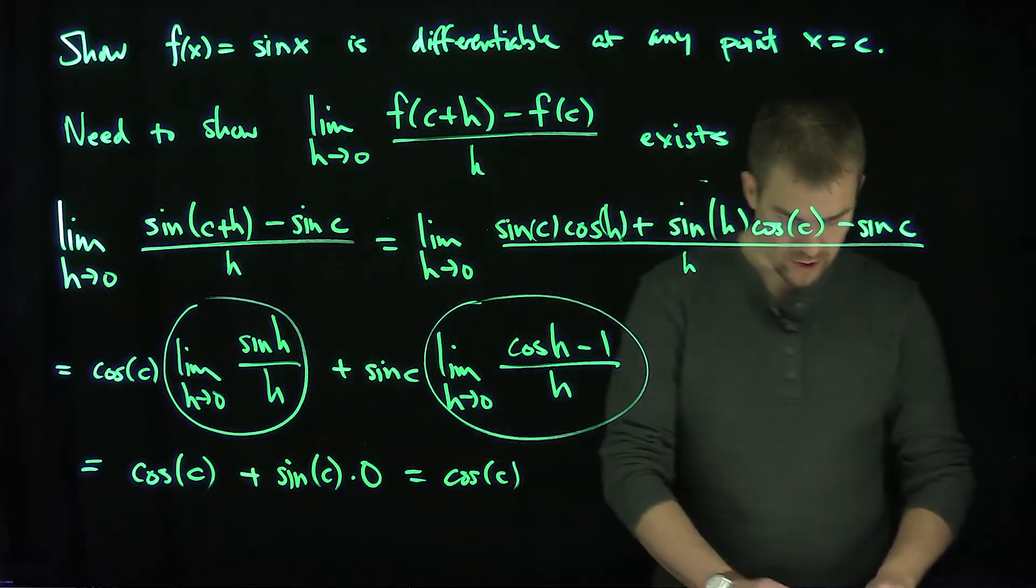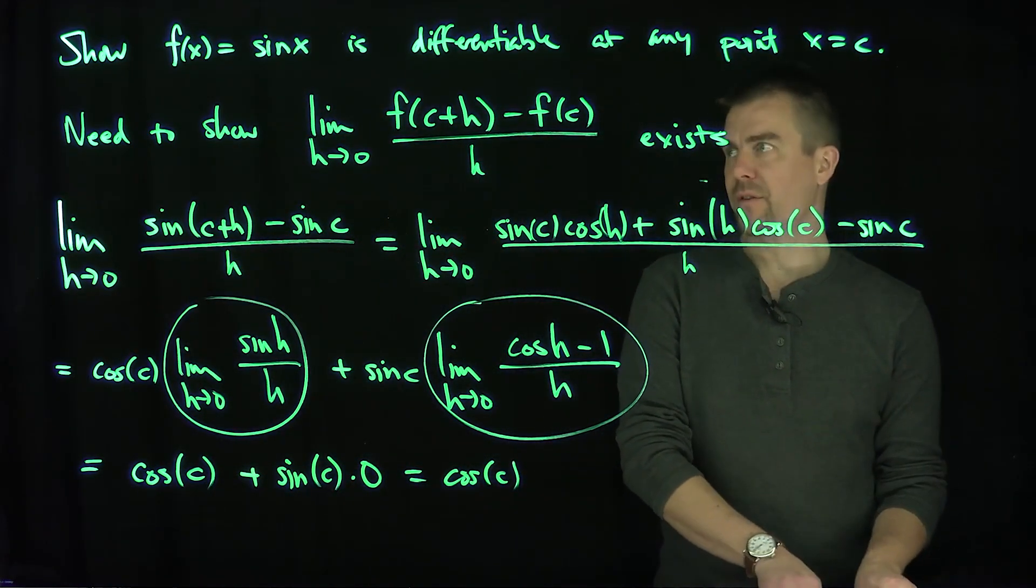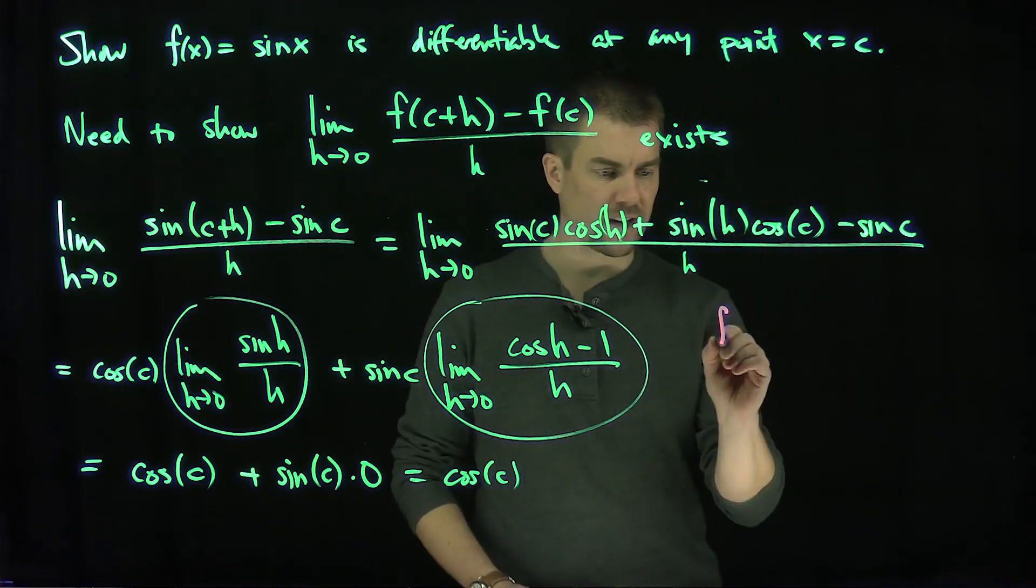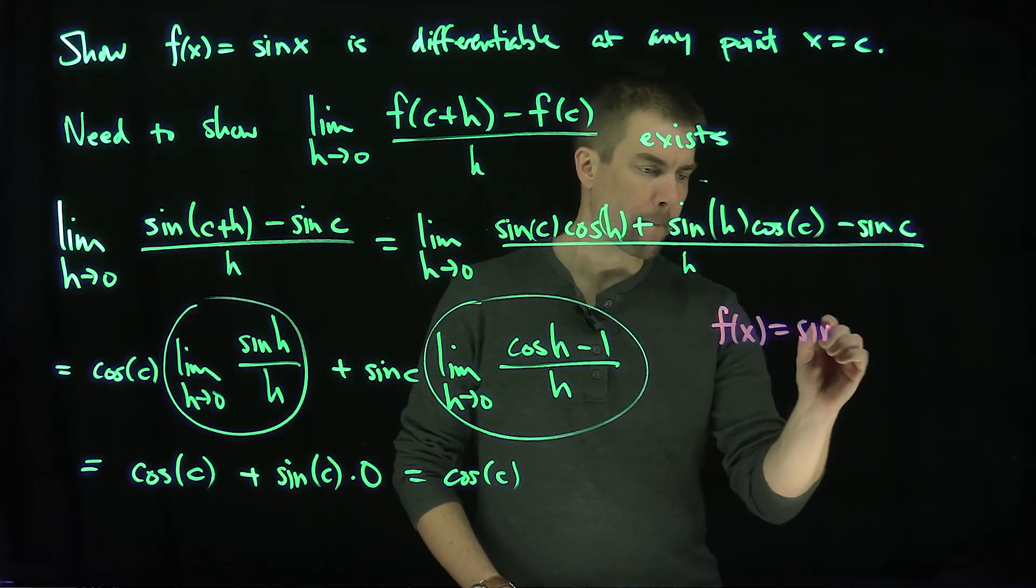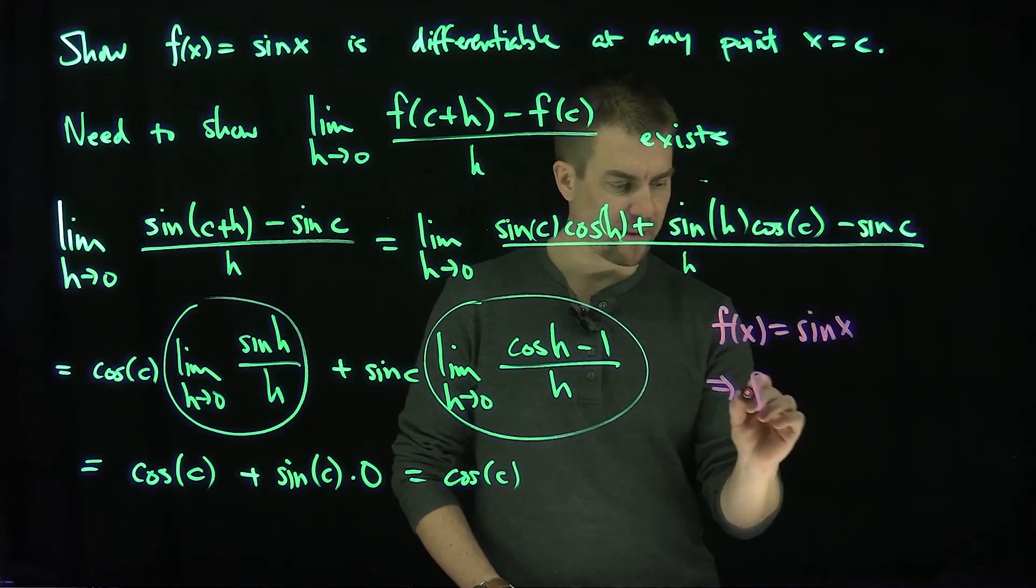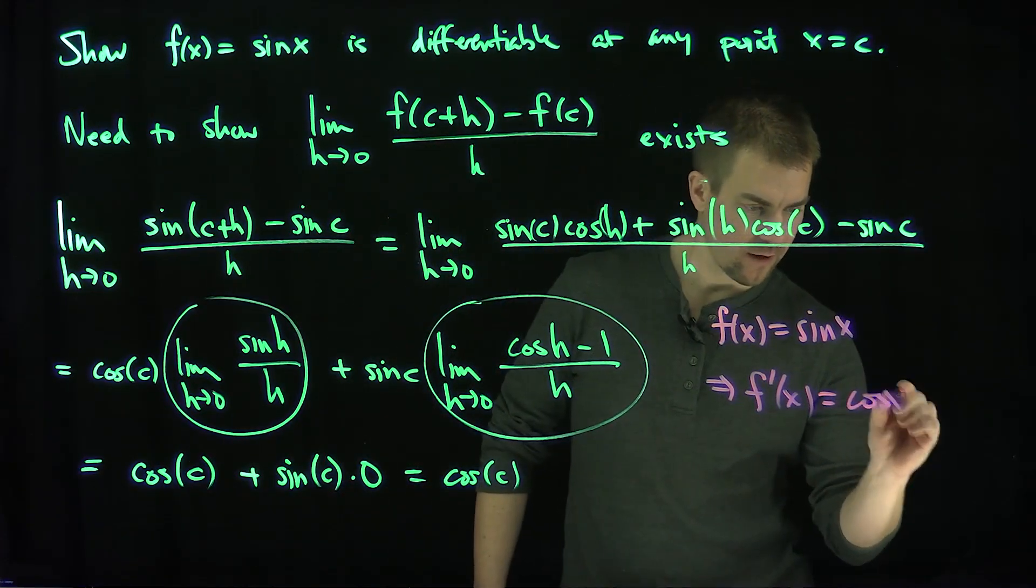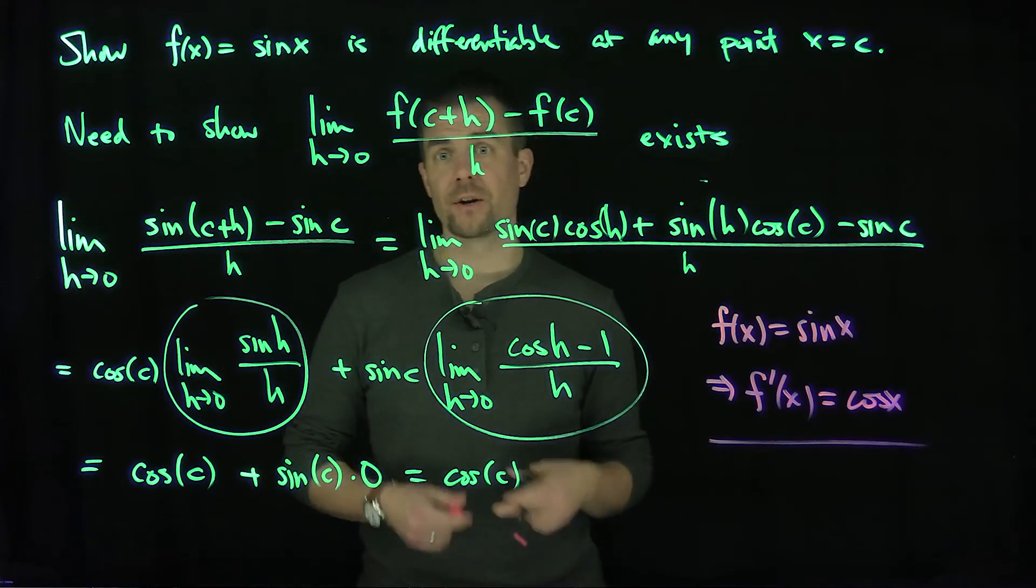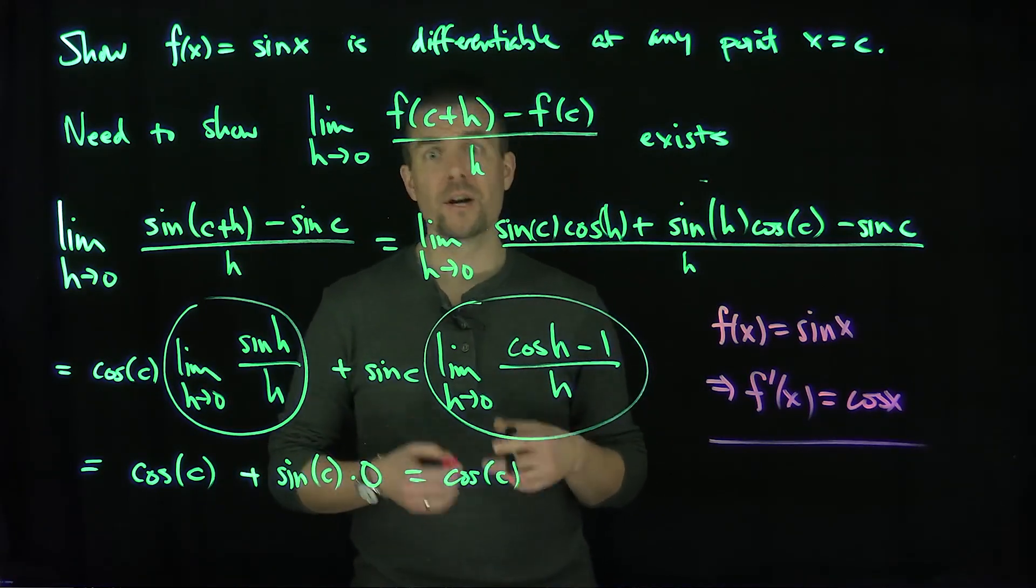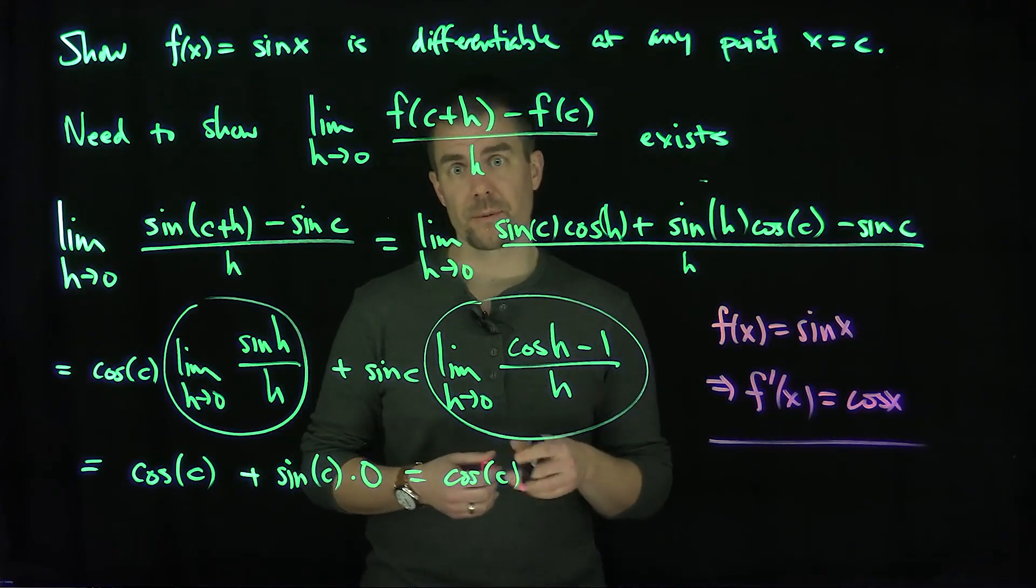And therefore we've proven our standard result. Namely, we've shown that the derivative of the function sine, so if f of x is sine of x, this implies that f prime of x is cosine of x. And we have our differentiation rule for sine. We can use this differentiation rule for sine to prove all the other derivative formulas for the trigonometric functions.